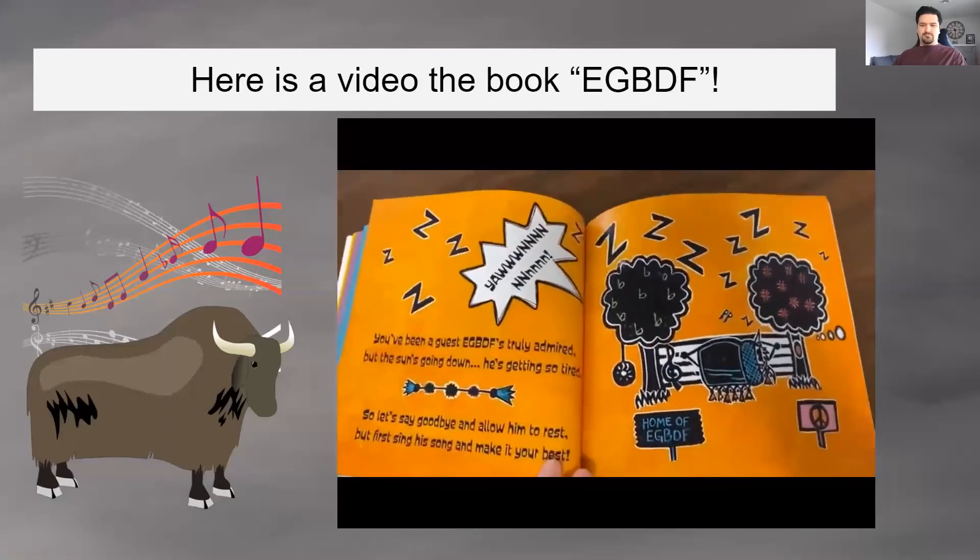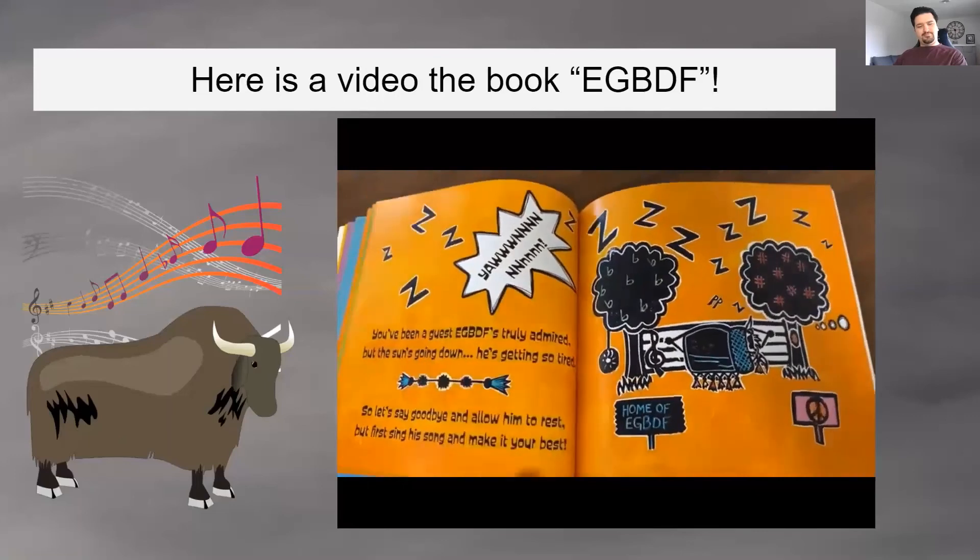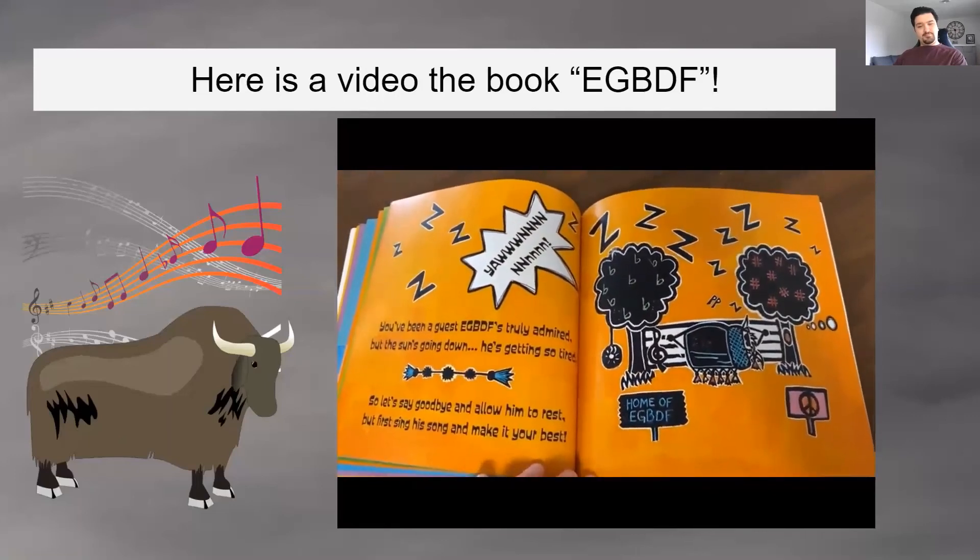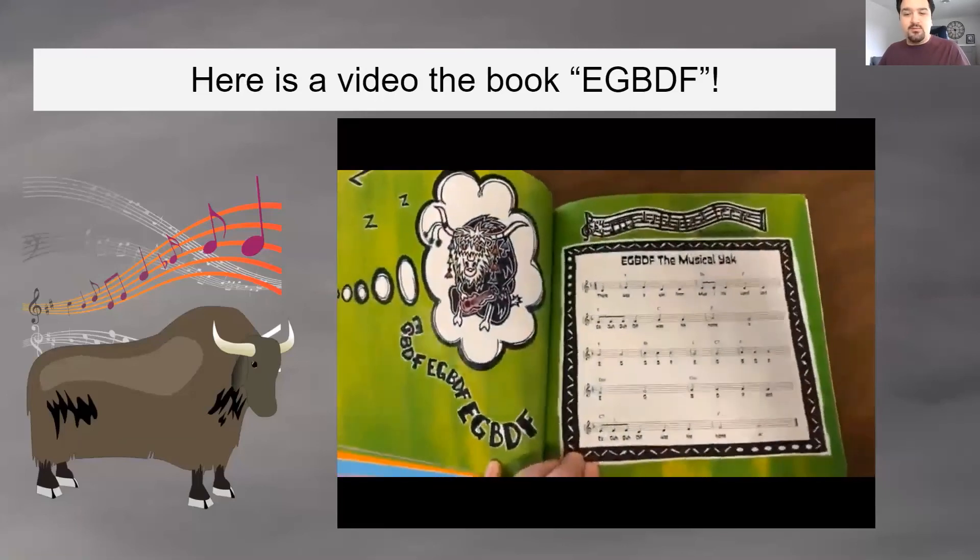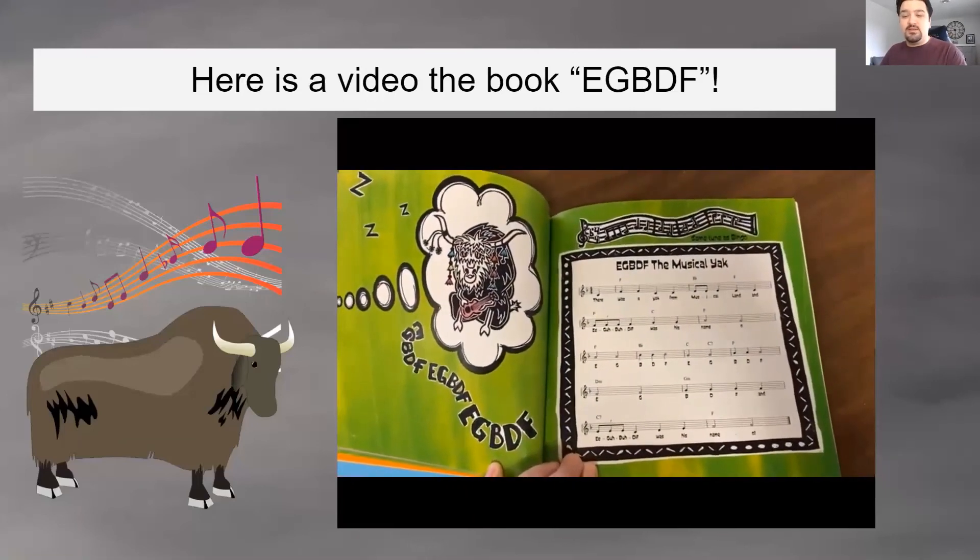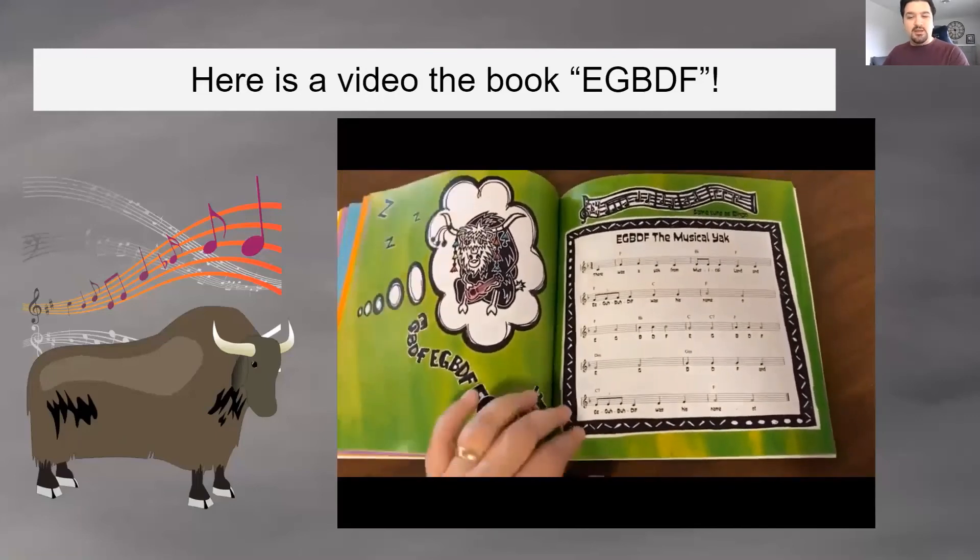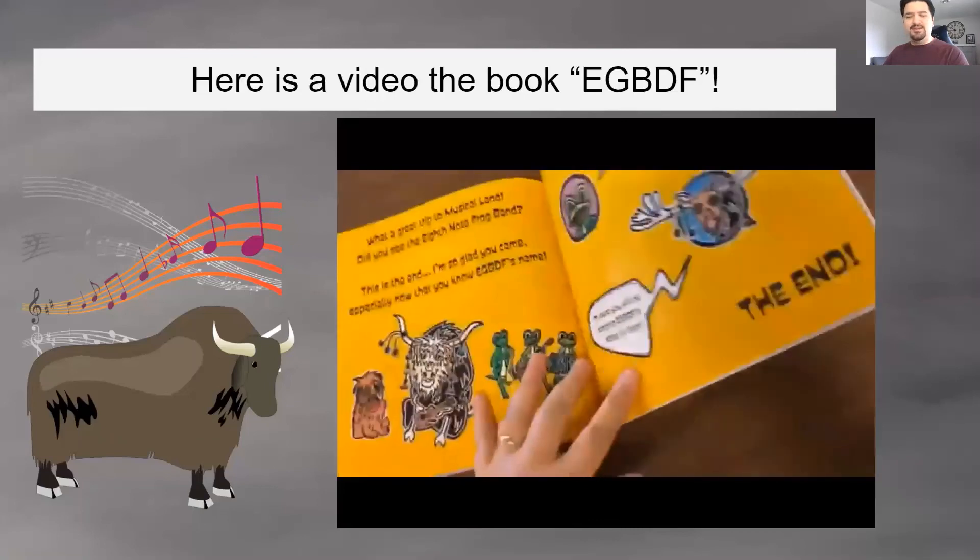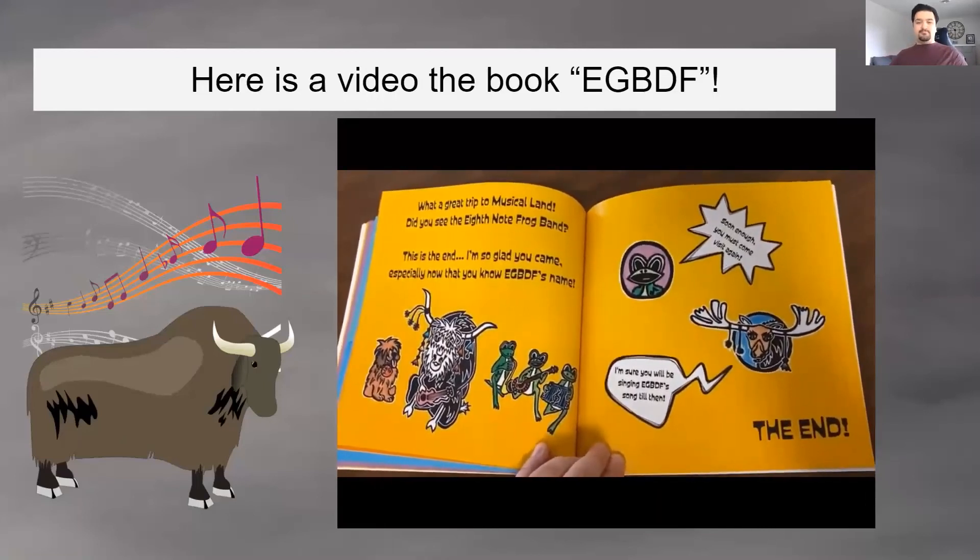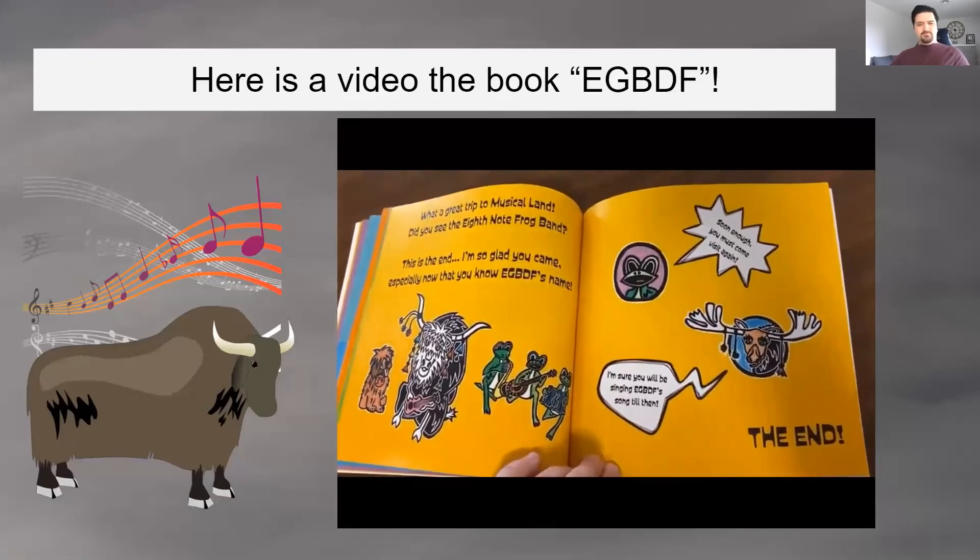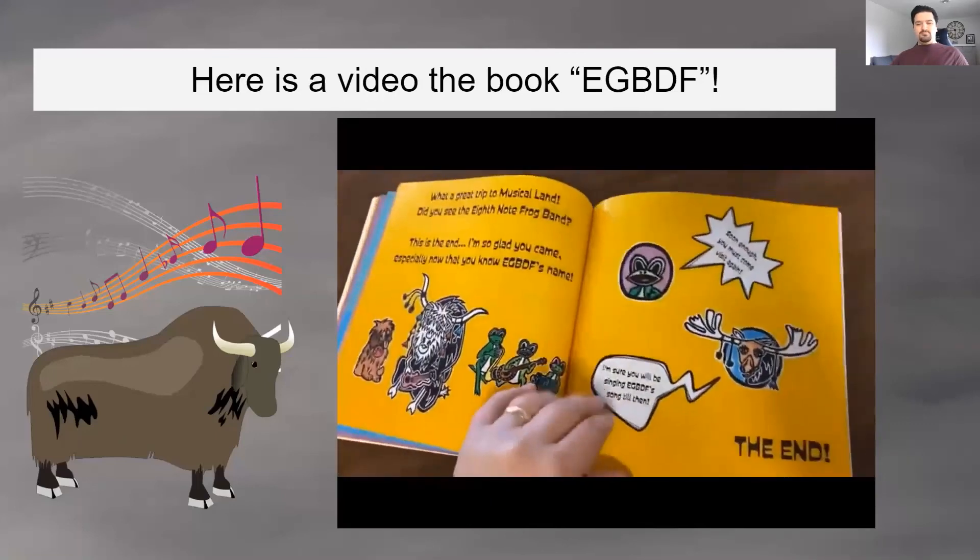You've been a guest, EGBDF. But the sun's going down. He's getting so tired. So let's say goodbye and allow him to rest. But first, sing his song and make it your best. Ready? Let's do it together. EGBDF. Here we go. What a great trip to Musical Land. Did you see the Eighth Note Frog Band? This is the end. I'm so glad you came, especially now that you know EGBDF's name. Soon enough, you must visit again. I'm sure you will be singing EGBDF's song till then. The end.